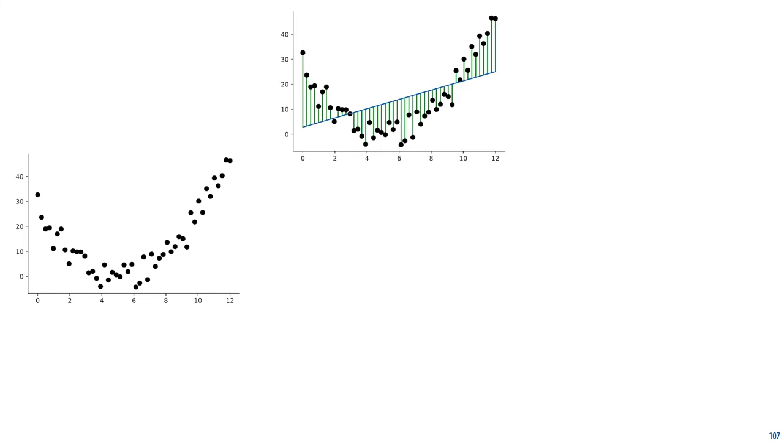we can send our receiver the parameters of that linear model, and then we have to send them all the values of all the residuals indicated here as green lines. Combining these with the model parameter, the receiver can reconstruct the data perfectly. And since the model is a linear function consisting of two numbers, we can expect to spend very few bits on describing the model, but it gives us very large residuals, so we can expect a large amount of bits to be required to express the data given the model.